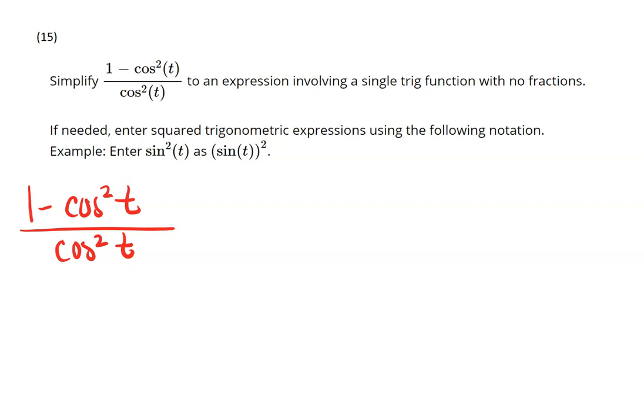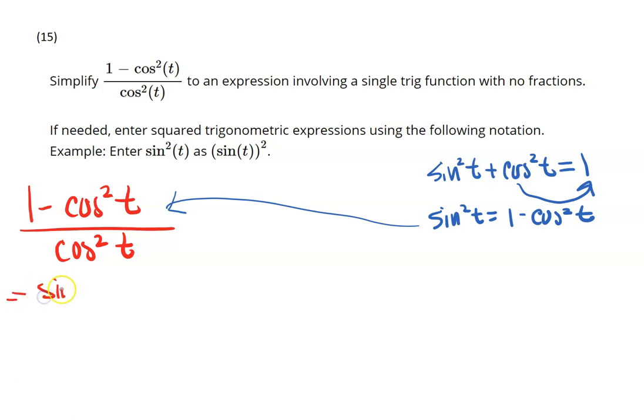Since I have a squared cosine and a 1, this is making me think that we need to use our Pythagorean identity of sine squared plus cosine squared is equal to 1. So if I manipulate that and move this cosine over, I get sine squared t equal to 1 minus cosine squared t. And then I'm going to make that substitution here in my numerator. So that gives me equal to sine squared t over cosine squared t.